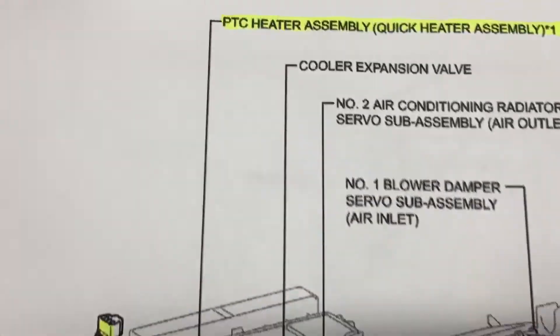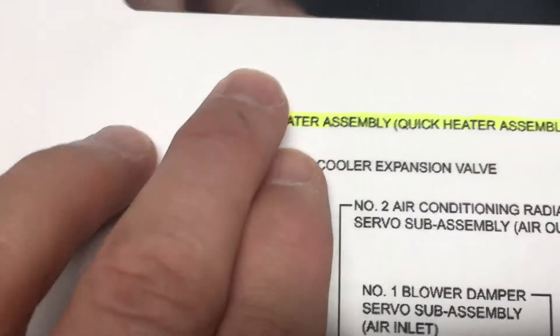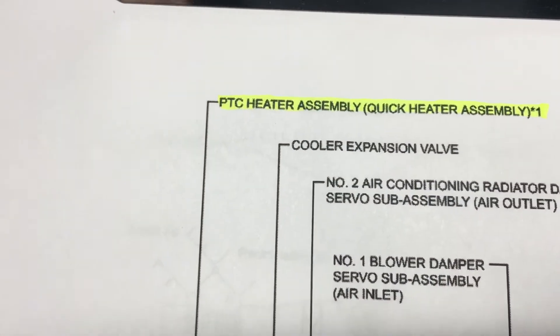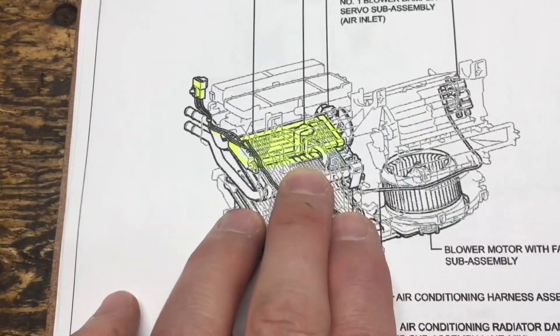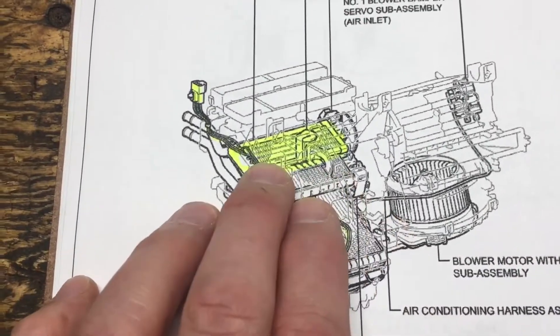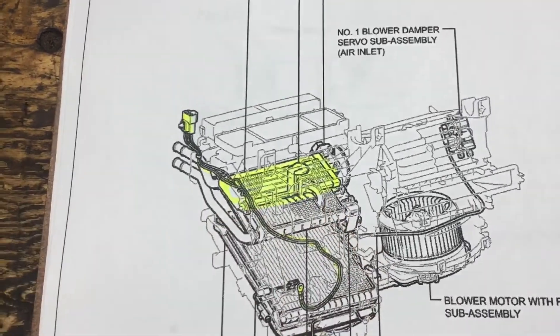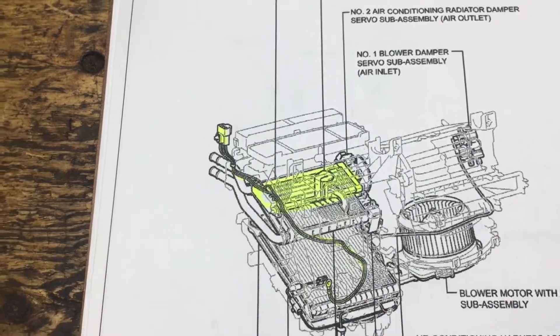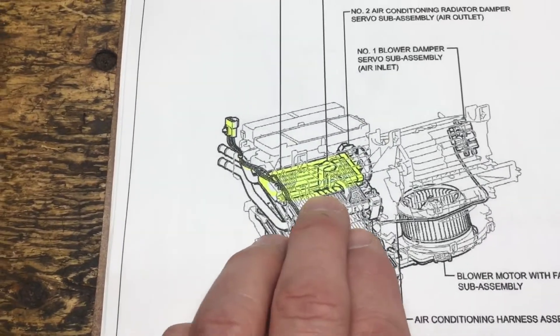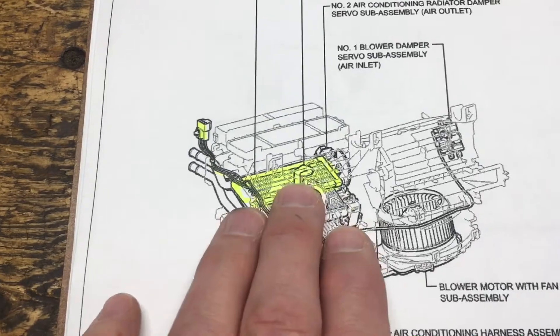I should mention what is a PTC - that's positive temperature coefficient heater. Basically it's a resistive block and the electrical characteristics are the hotter it gets, the higher the resistance. So it's kind of self-limiting with respect to the current it's going to draw. The current draw is going to be a function of the airflow that's over it.